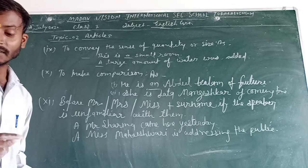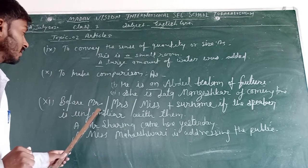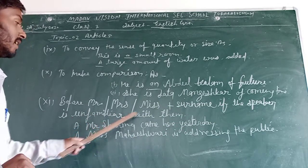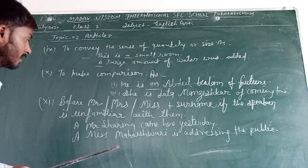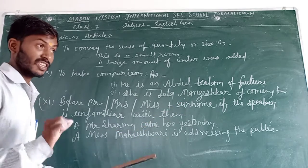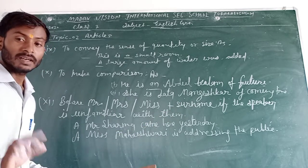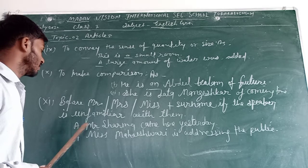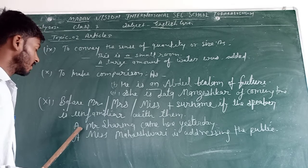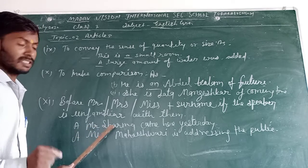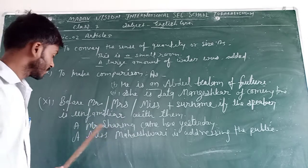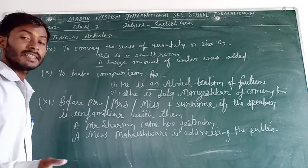Before Mr. and Mrs., Miss plus surname, if the speaker is unfamiliar with them. Mr., Miss, Mrs., and Miss, it's called surname, not a particular name. A Mr. Sharma came there yesterday. A is used. Here Mr. Sharma is unfamiliar with speaker. And Mrs. Maheswari is addressing the public.